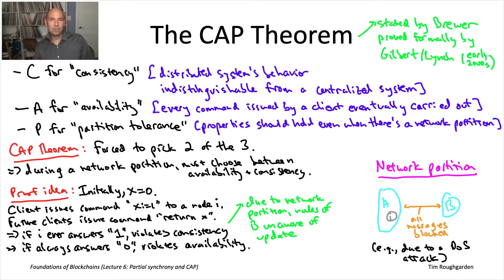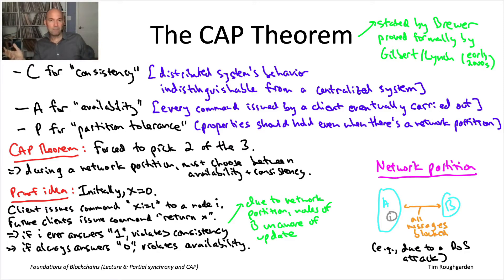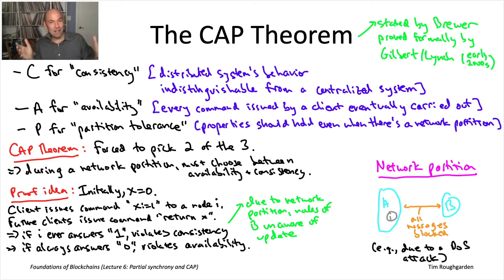If in your application you really do want to worry about network partitions — if this is something you're running at a global scale — the CAP theorem makes it very clear you need to decide which would hurt more: giving up on consistency or giving up on availability. Different applications are going to be making different trade-offs. Traditional databases have prioritized consistency over availability, so under a network partition they would basically stop operating but they'd never be inconsistent.